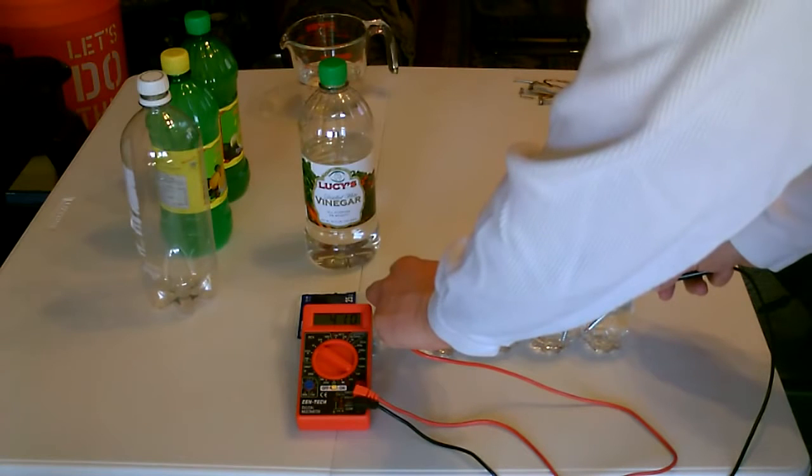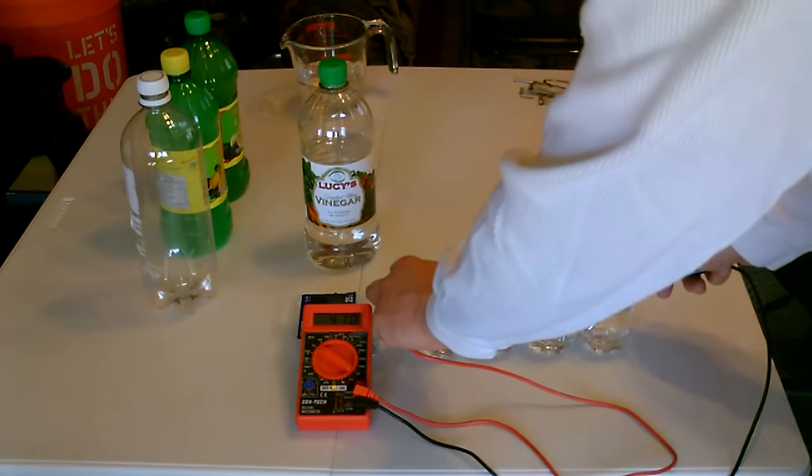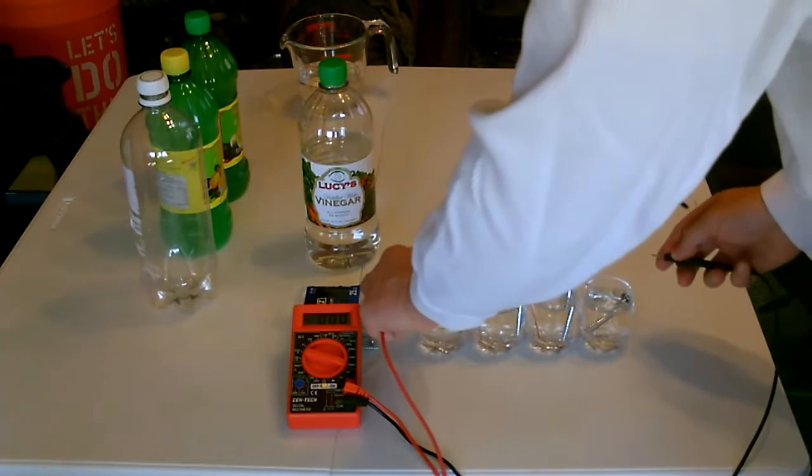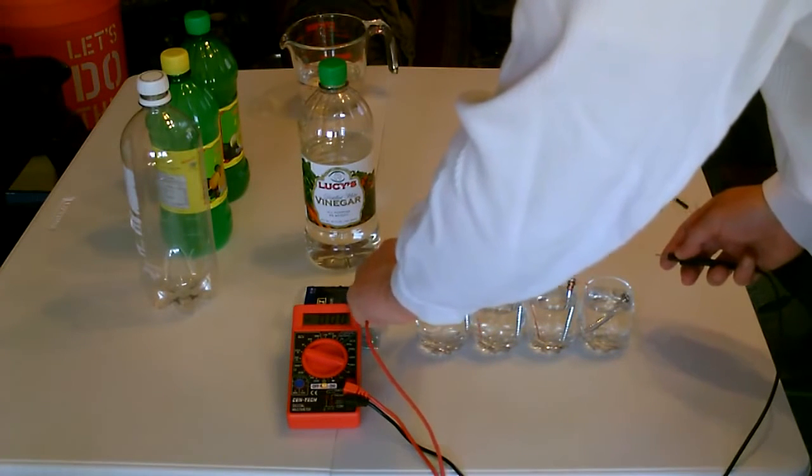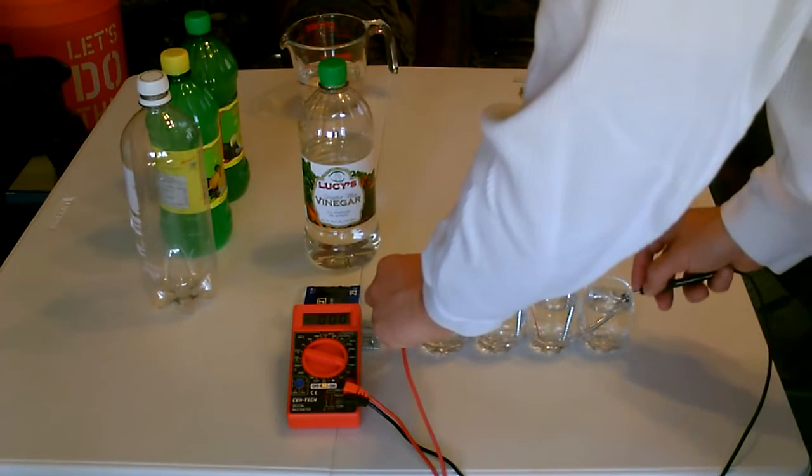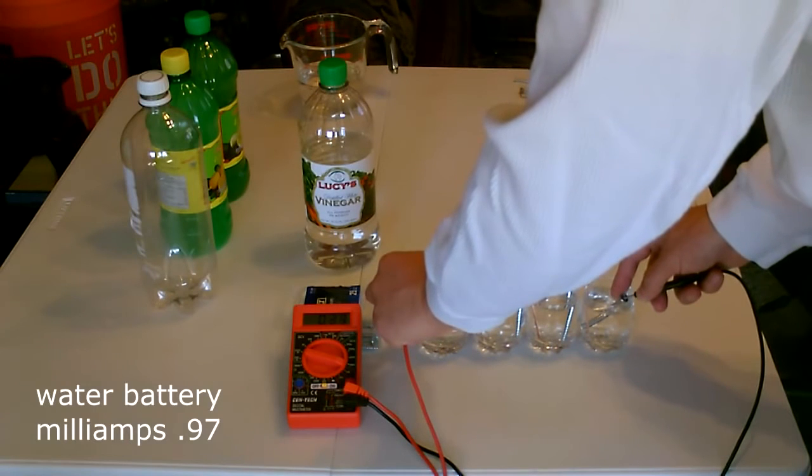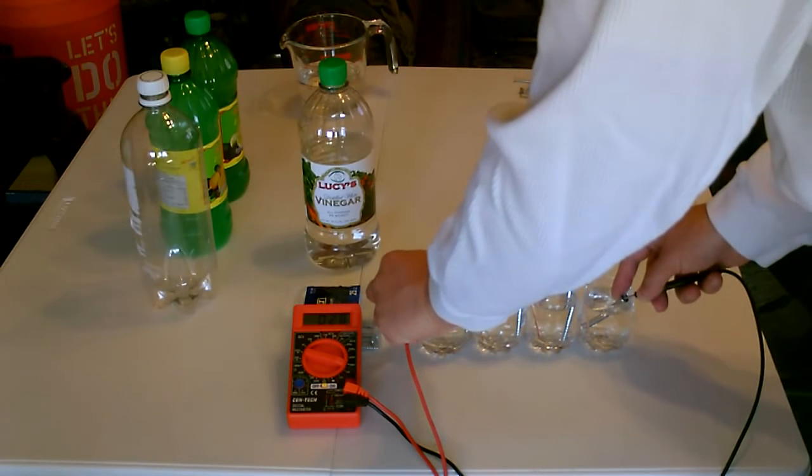The tap water one was 3.25 roughly. Vinegar is holding very steady at 4.1 volts, so definitely stronger than the tap. See what kind of amperage we can get out of this. This is the vinegar battery again. 2.3.